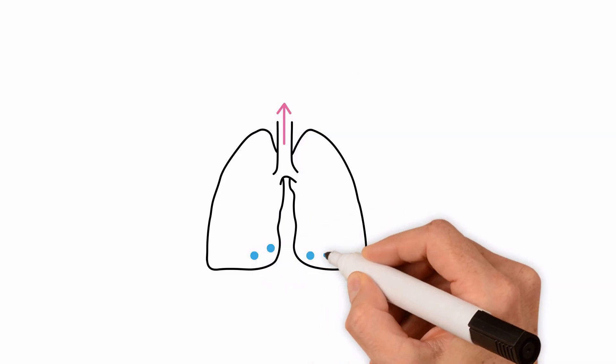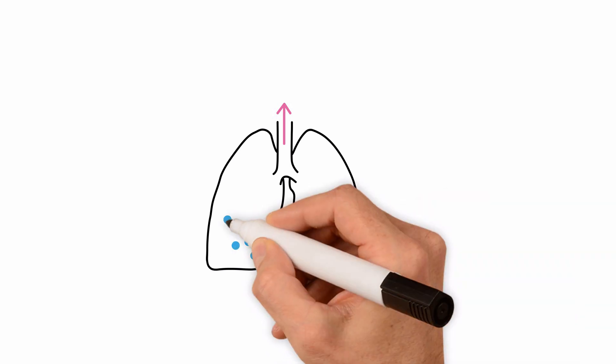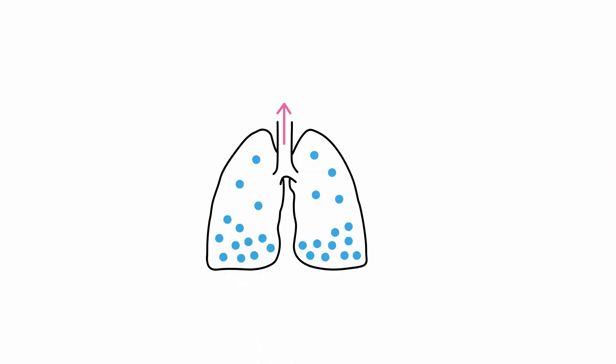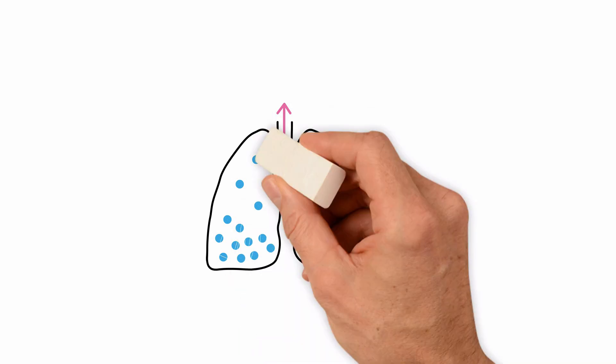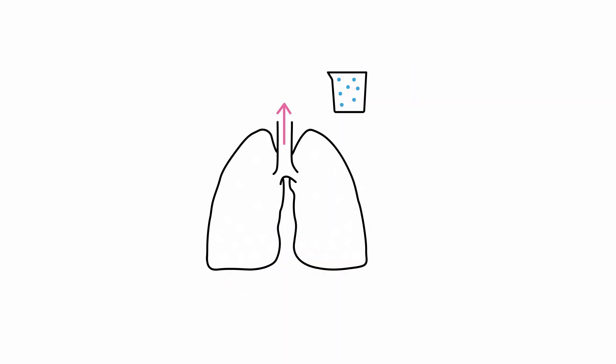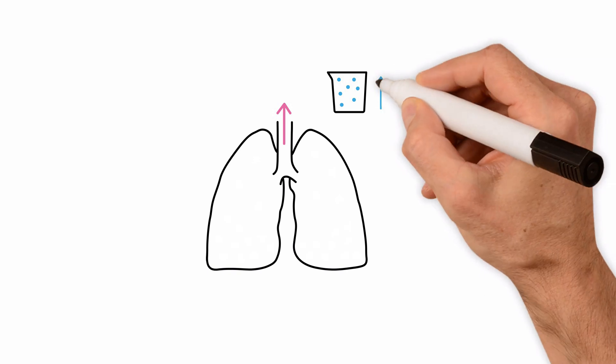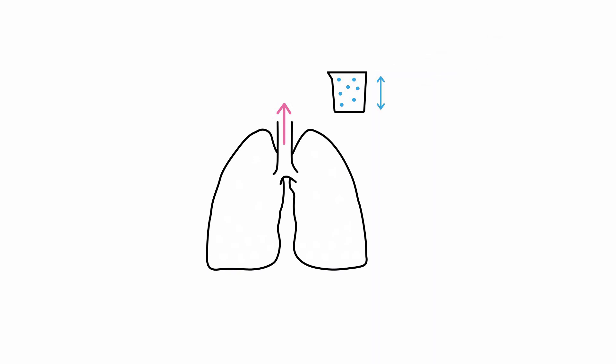Exhaled gas concentrations can also provide information on the uniformity of inspired gas distribution throughout the lungs. When we exhale, the concentration of gases in the expirate changes from beginning to end of expiration.